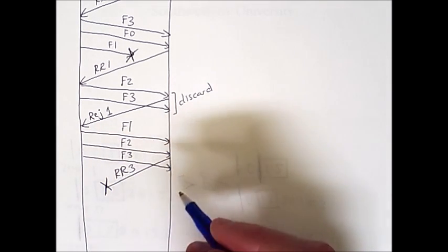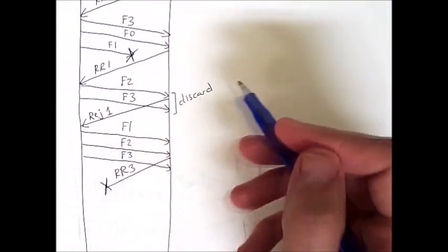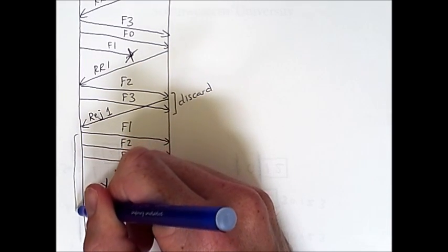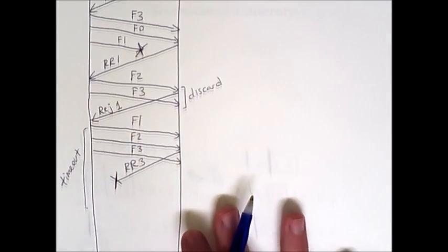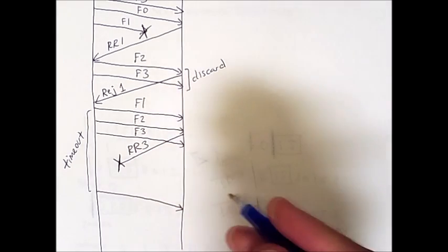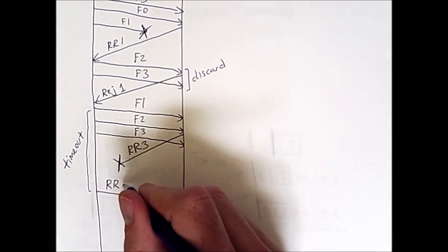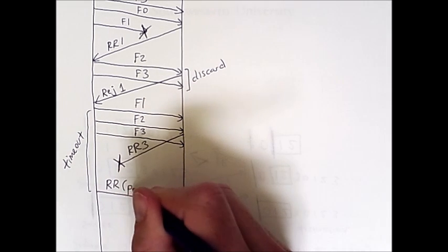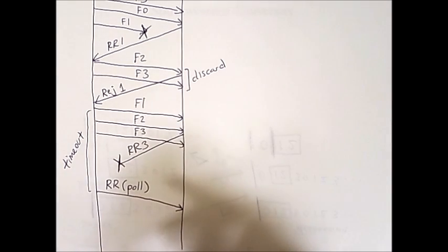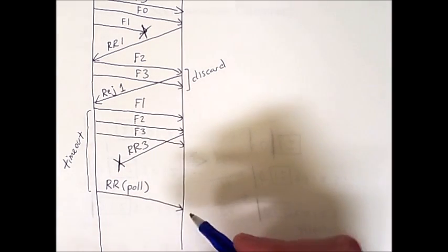Now what happens on the source side is that after a certain period of waiting, we will once again get a timeout. Now the last time we had any messages successfully received from the destination was here. So the timeout period starts from there, and once that period elapses, we will send a ready-to-receive query from the source side. So this is a ready-to-receive frame, but it has a pull bit sent to 1. Essentially, the source is asking the destination, what should I send next? Can you remind me where we left off?